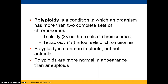Polyploidy, on the other hand, is a condition in which an organism has more than two complete sets of chromosomes, and this most often occurs in plants, but animals typically can't tolerate it. Polyploids are more normal in appearance than aneuploids. Aneuploids have an abnormality at a particular chromosome number, whereas polyploids have an entire set or multiple sets of chromosomes in addition to normal. Triploidy is three sets of chromosomes, and tetraploidy is four sets — compare these to haploid (one set) and diploid (two sets).